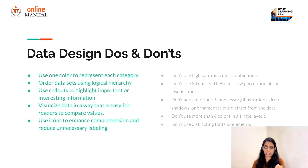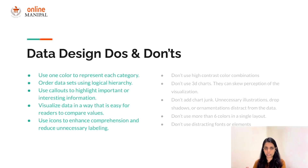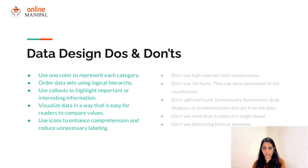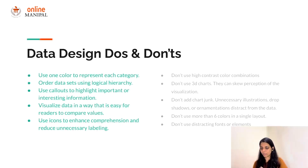Some common dos while creating visualizations: represent one category with one color. Order the data in a logical hierarchy — that's very important. Use call-outs, highlights, or narratives to highlight important information. Visualize data in a way that is easy for users to compare values, and add little icons to enhance comprehension and reduce unnecessary labeling.